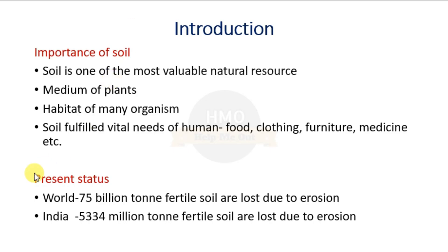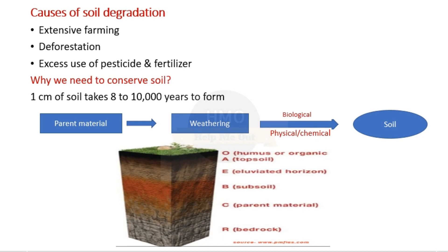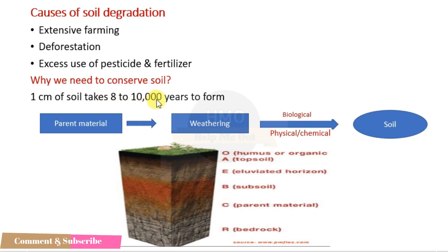Looking at the present scenario, worldwide approximately 75 billion tons of fertile soil are lost due to erosion, and in India it is 5,334 million tons. Because of this, soil erosion has become a serious problem. Soil fertility is declining rapidly due to various reasons such as extensive farming, deforestation, and excess use of pesticides and fertilizers.